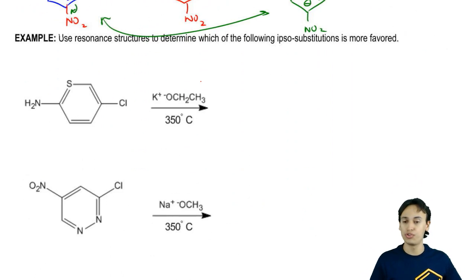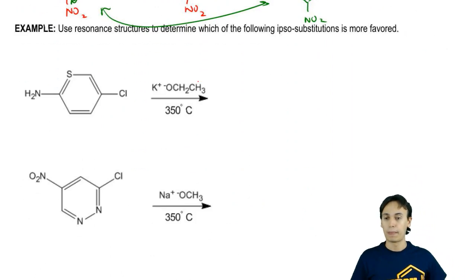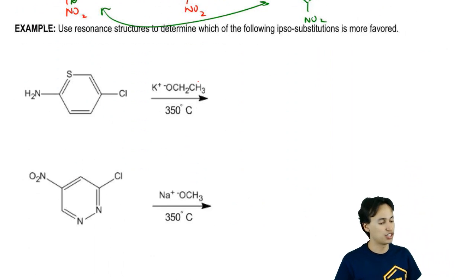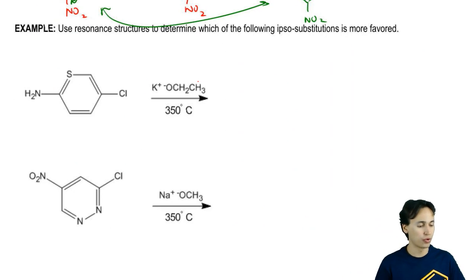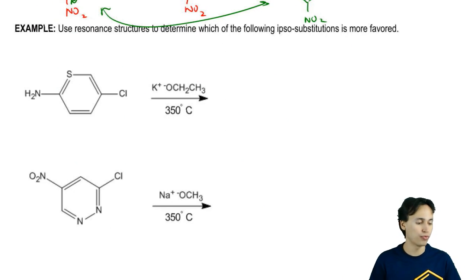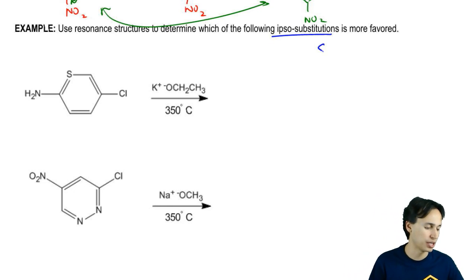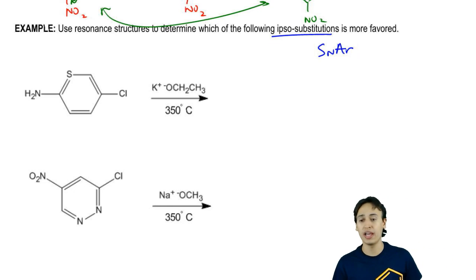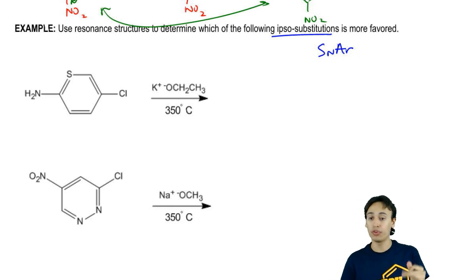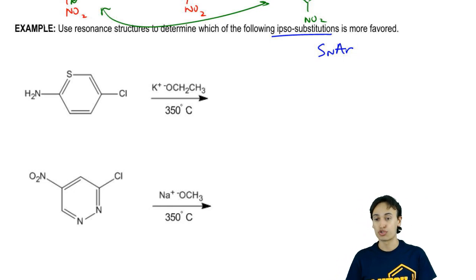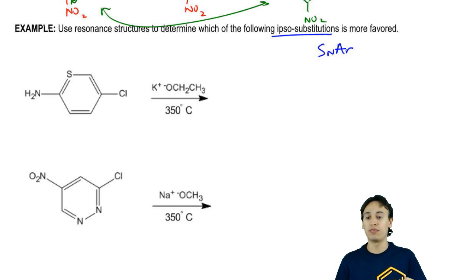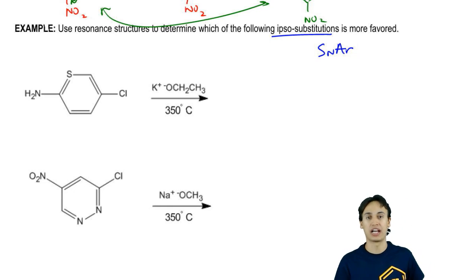We're going to look at the following two reactions. It says: use resonance structures to determine which of the following ipso substitutions is more favored. Remember that ipso substitution is just another name for SNAr. Go ahead and look at both of these, try to draw resonance structures, and then figure out which one is going to be the more favored reaction.